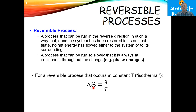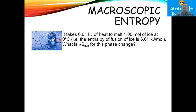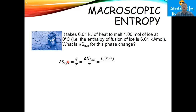In these reversible processes, you can actually calculate your entropy really simply. Your change in entropy is just going to be equal to the heat being added divided by the temperature. For example, if it takes 6.01 kilojoules of heat to melt one mole of ice at zero degrees Celsius — that is, the enthalpy of fusion of ice is 6.01 kilojoules per mole — what is the delta S of the system for this phase change? The heat we're adding, this 6.01 kilojoules, is equal to the molar enthalpy of fusion. Since we're dealing with just one mole, that's 6,010 joules.